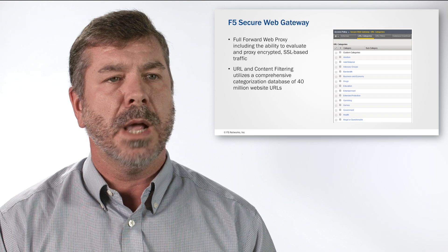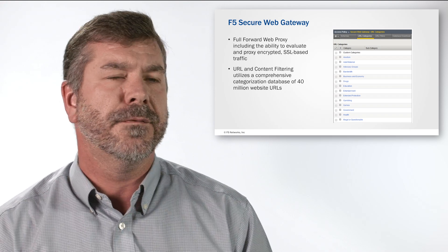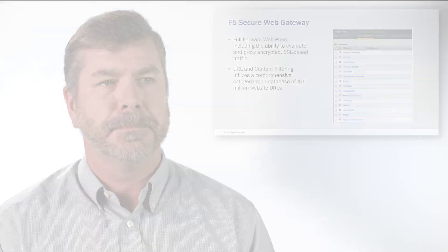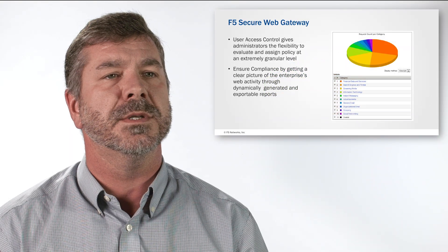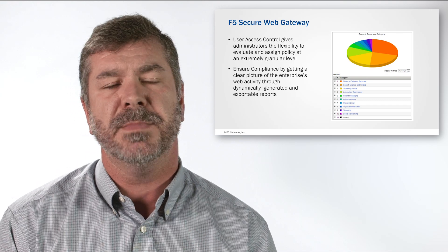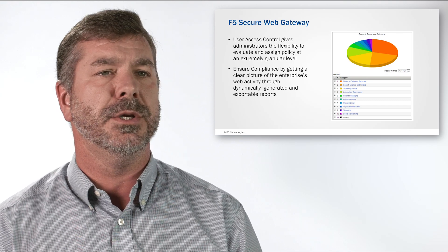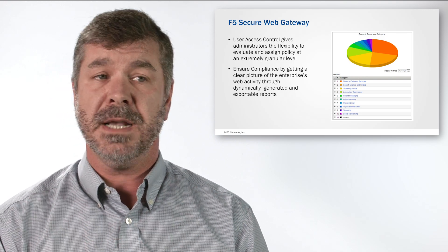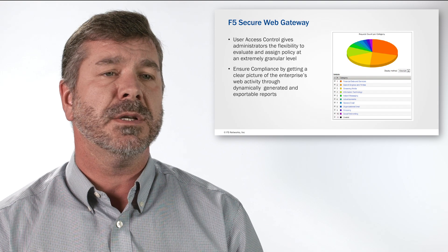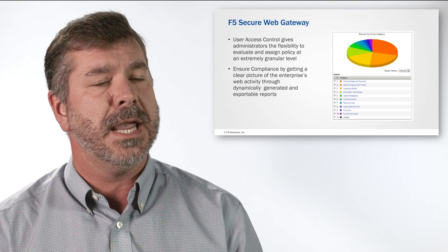F5 integrates with WebSense to provide a categorization database of over 40 million website URLs. From a technical perspective, perhaps the most interesting part of SWG is its ability to apply user access controls. SWG is actually part of the APM, or Access Policy Manager, module, which means we can apply controls based upon very specific user attributes — group membership, where a user is coming from, what type of device they're on — and apply policies very specific to that user.